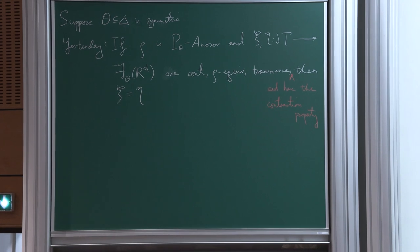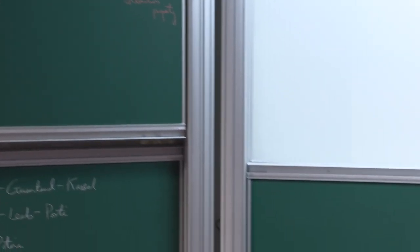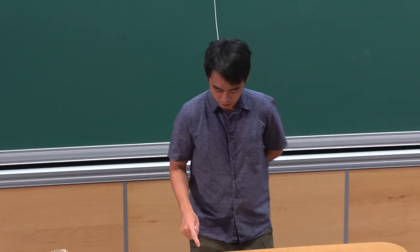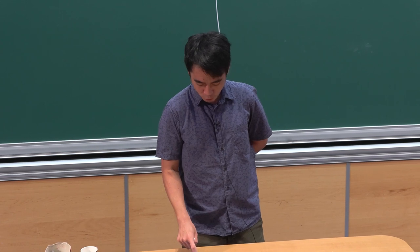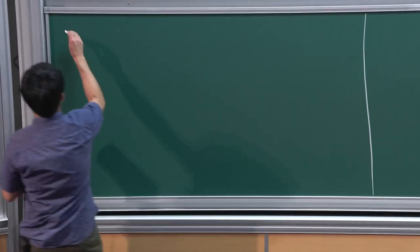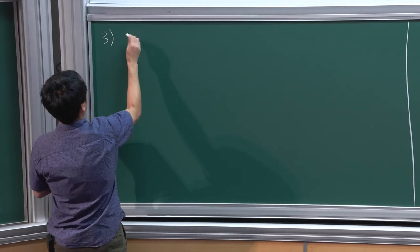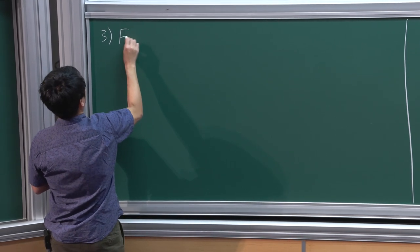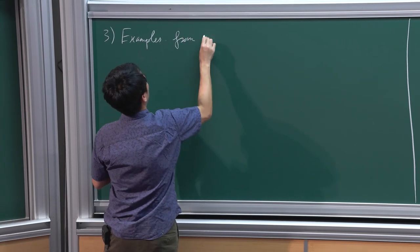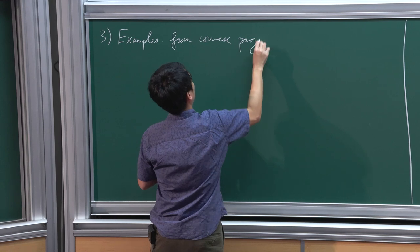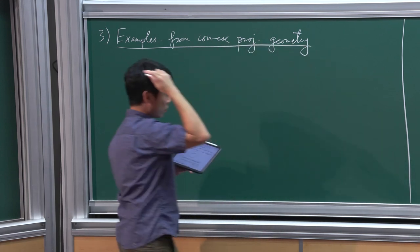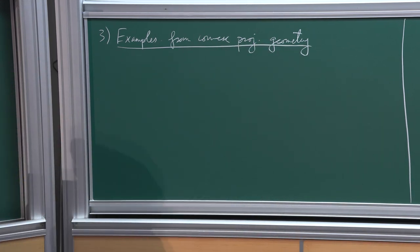Last time I gave two examples of non-self representations, but they were all of surface groups. Today I'm going to give one more class of examples that are not of surface groups. This is examples via, or examples from, convex projective geometry. This is really the work of Andrew Zimmer and Danciger-Guéritaud-Kassel.